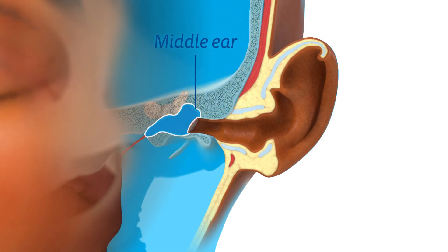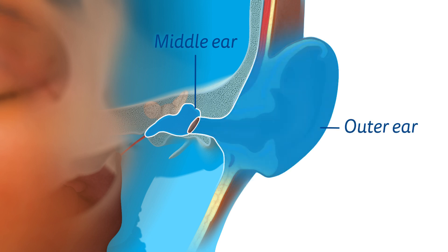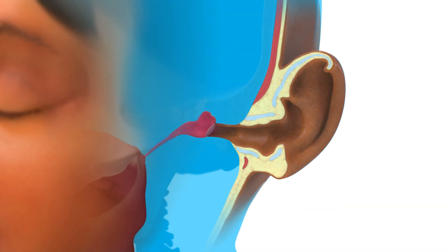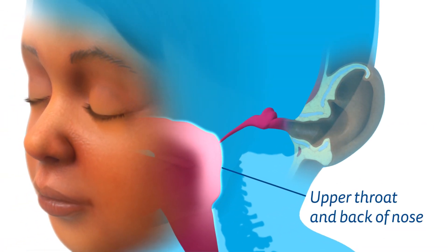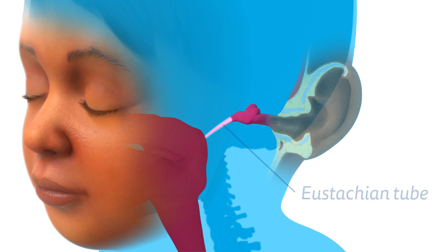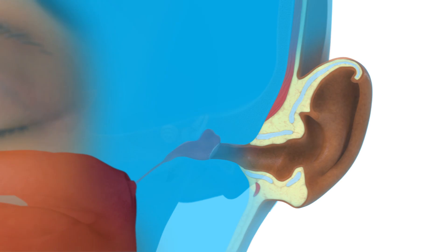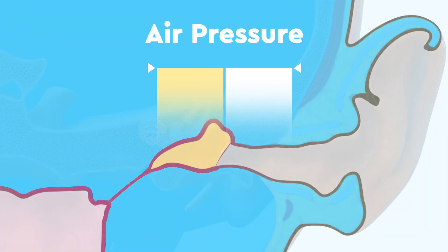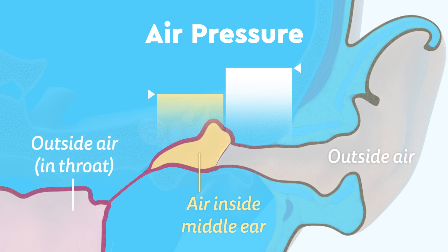The middle ear is separated from the outer ear by the eardrum, and is connected to the upper throat and the back of the nose via the eustachian tubes. The eustachian tubes help equalize air pressure in the middle ear, which can sometimes be lower than the air pressure outside the ear.